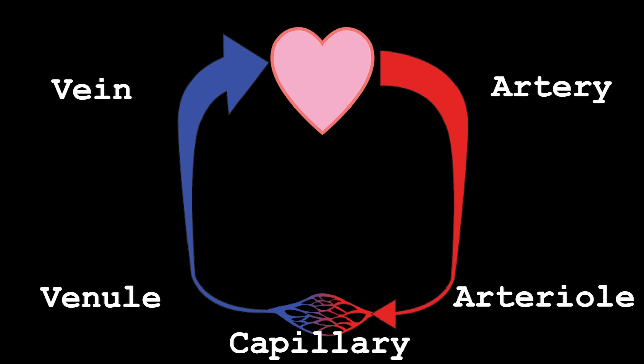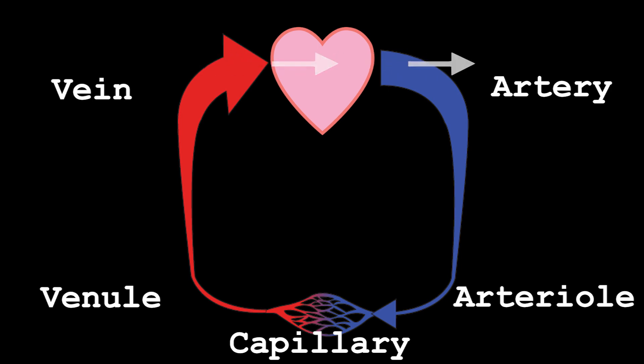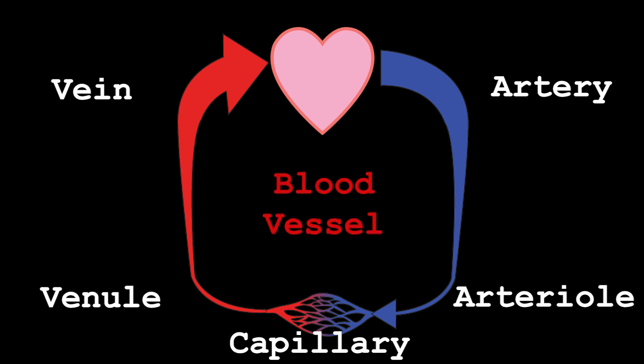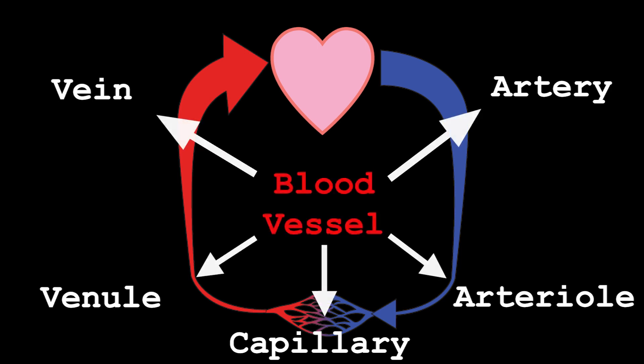Even though this diagram shows arteries in red and veins in blue, this isn't always the case. Sometimes we'll have blue arteries and red veins. What determines an artery versus a vein is the direction of blood flow. We'll talk more about what color means later.